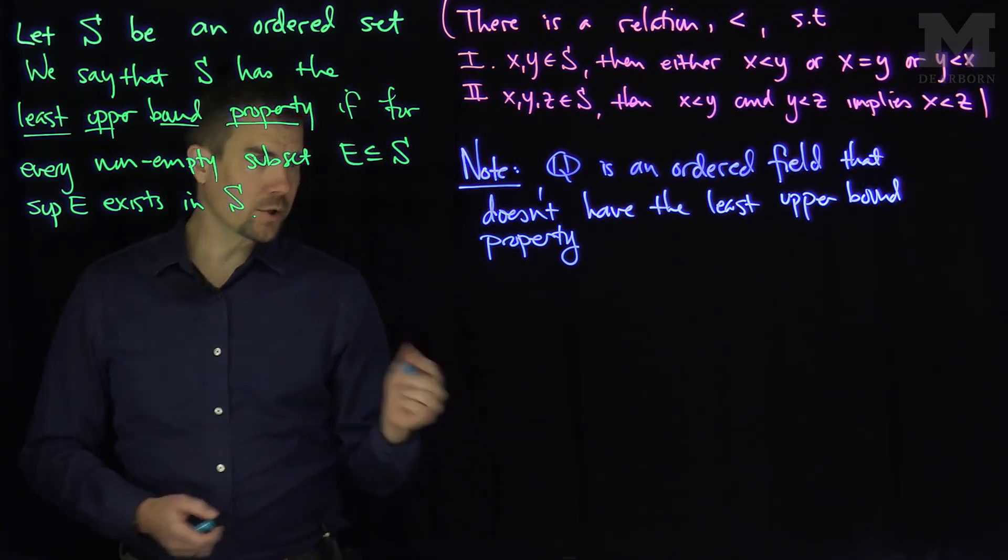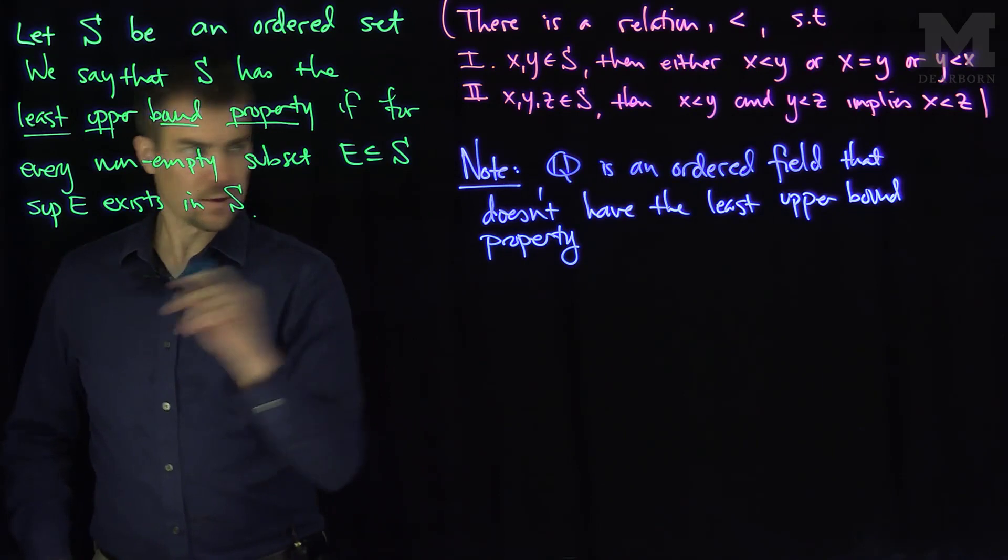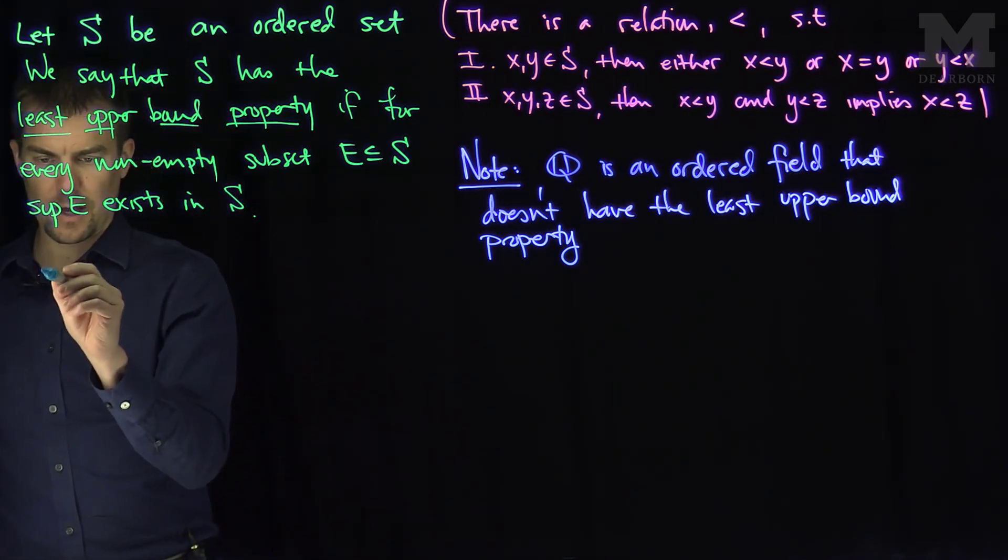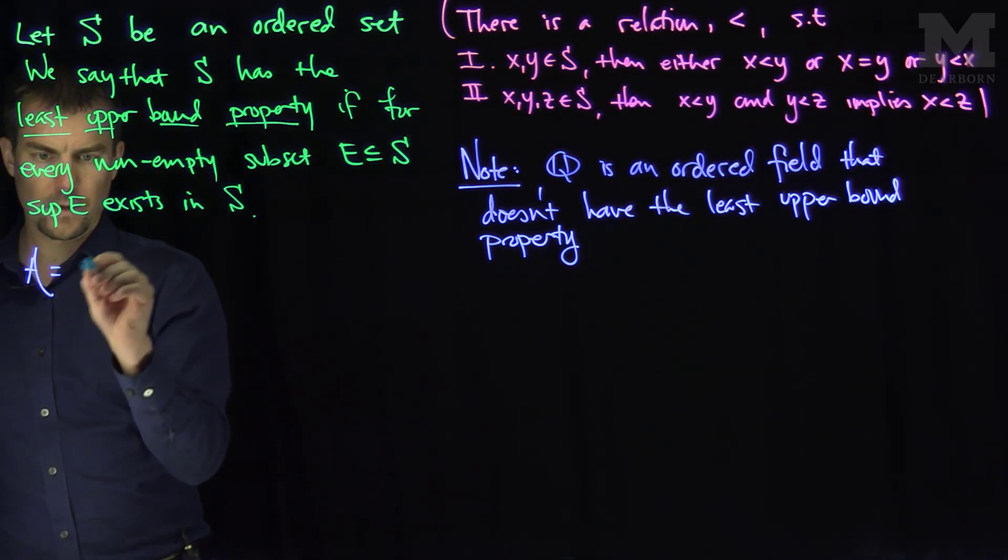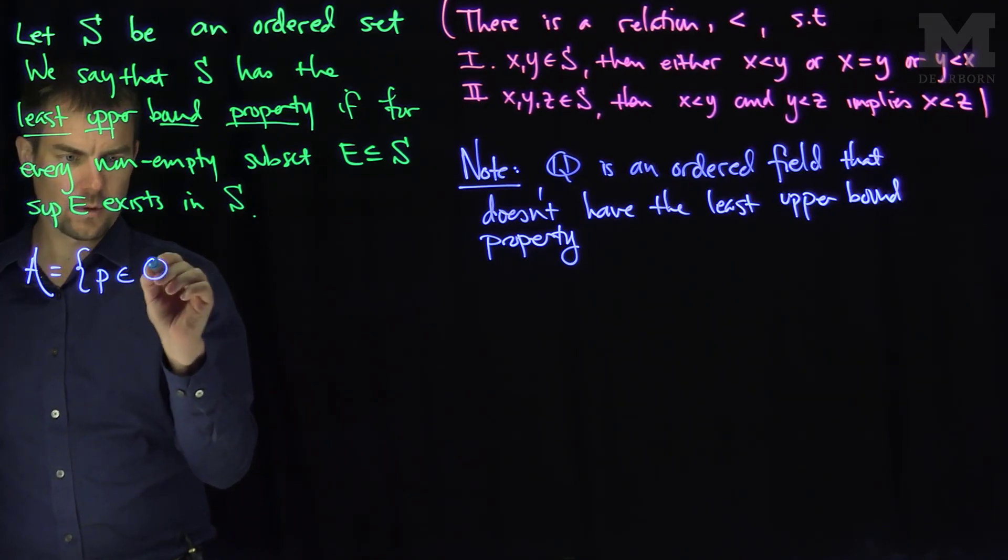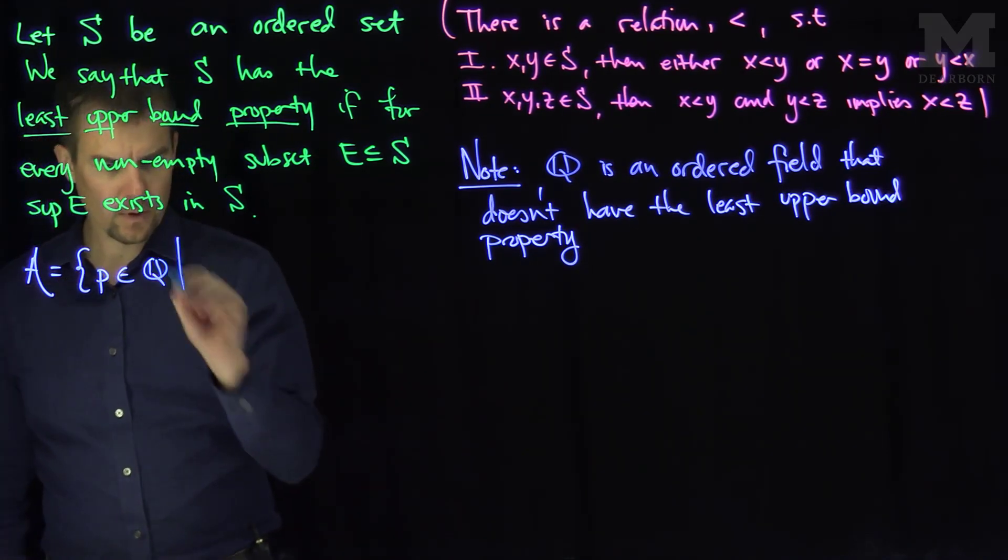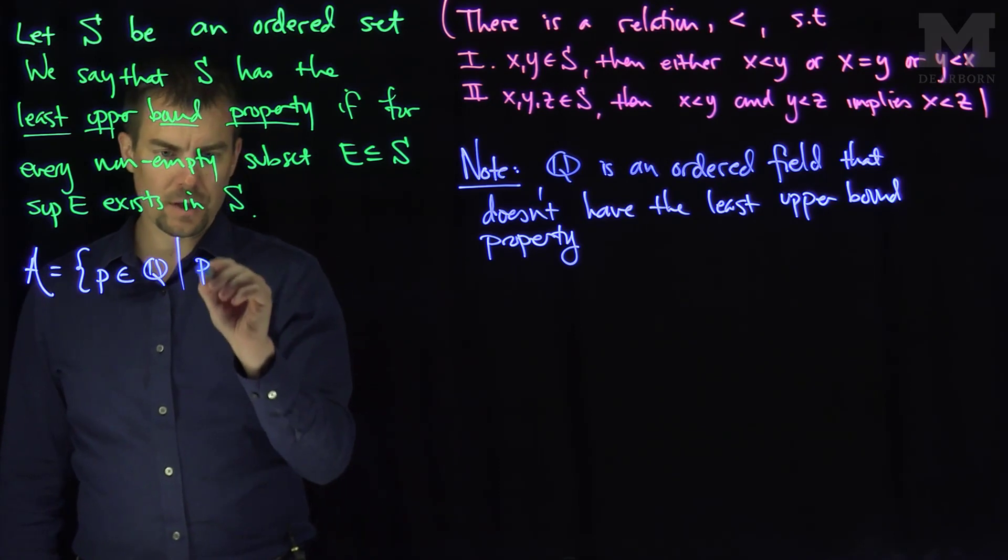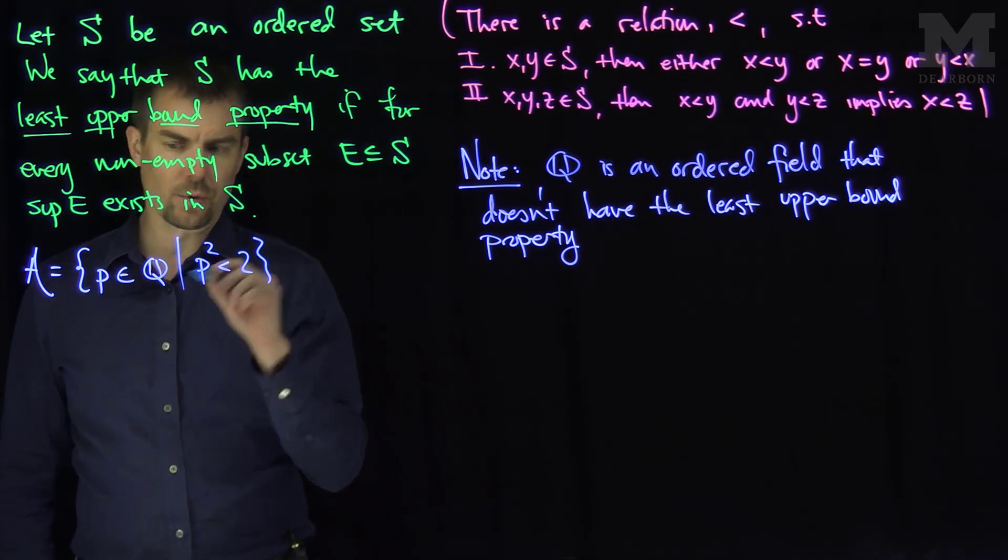So to show this, we can do the following, we can consider the sets. The set A is the set of rational numbers P, such that P squared is less than two.